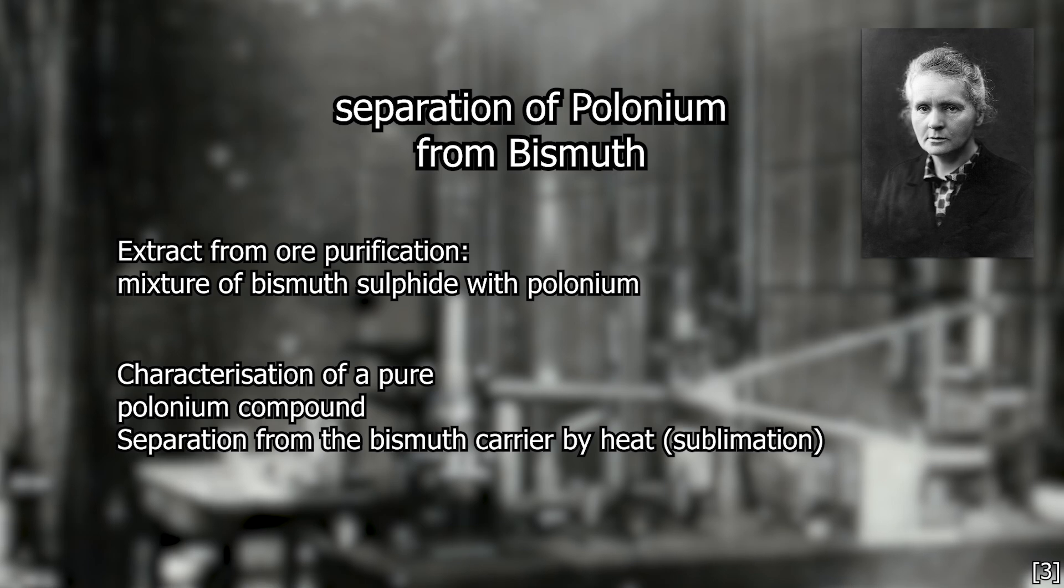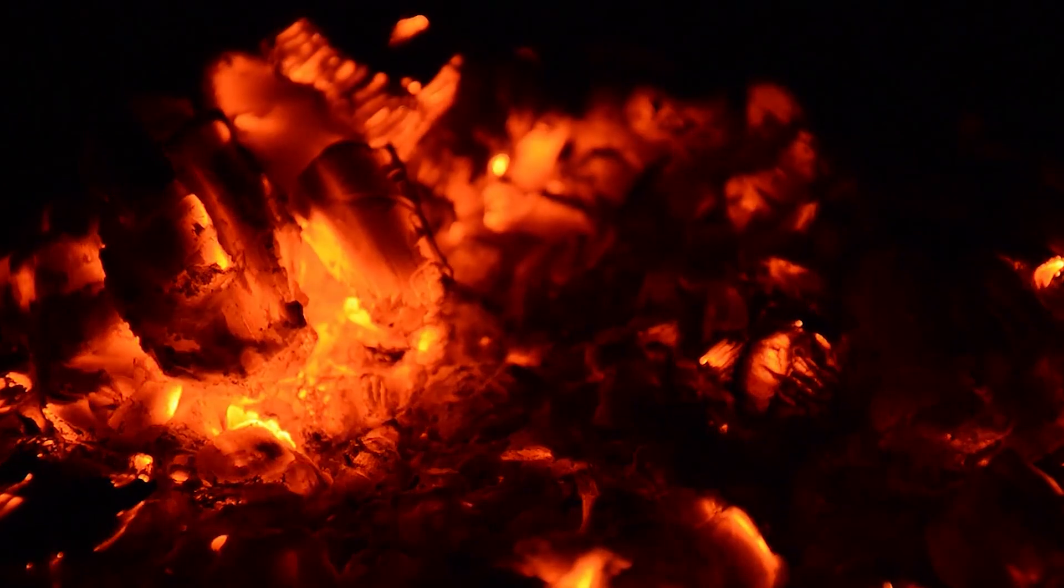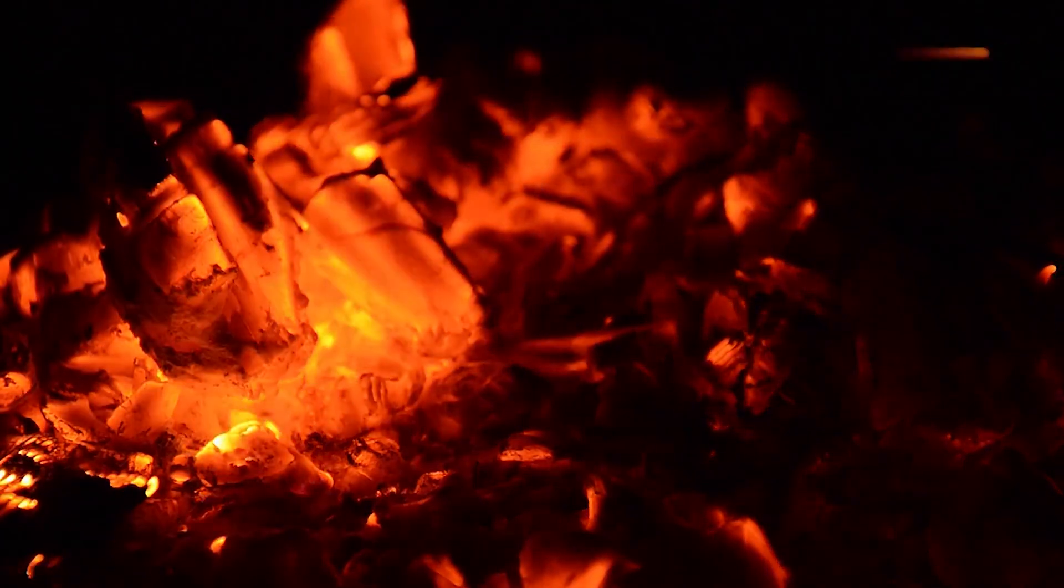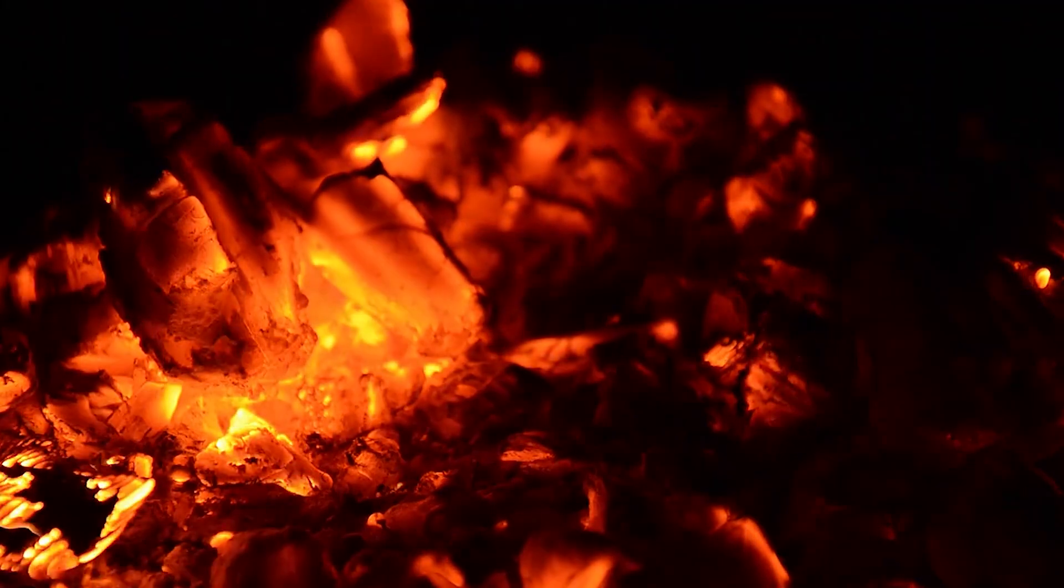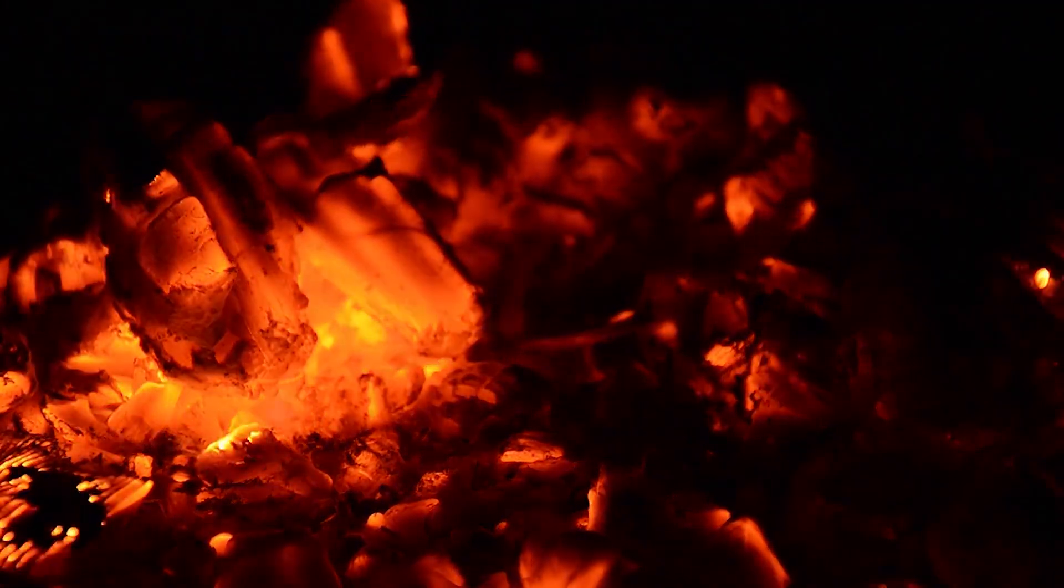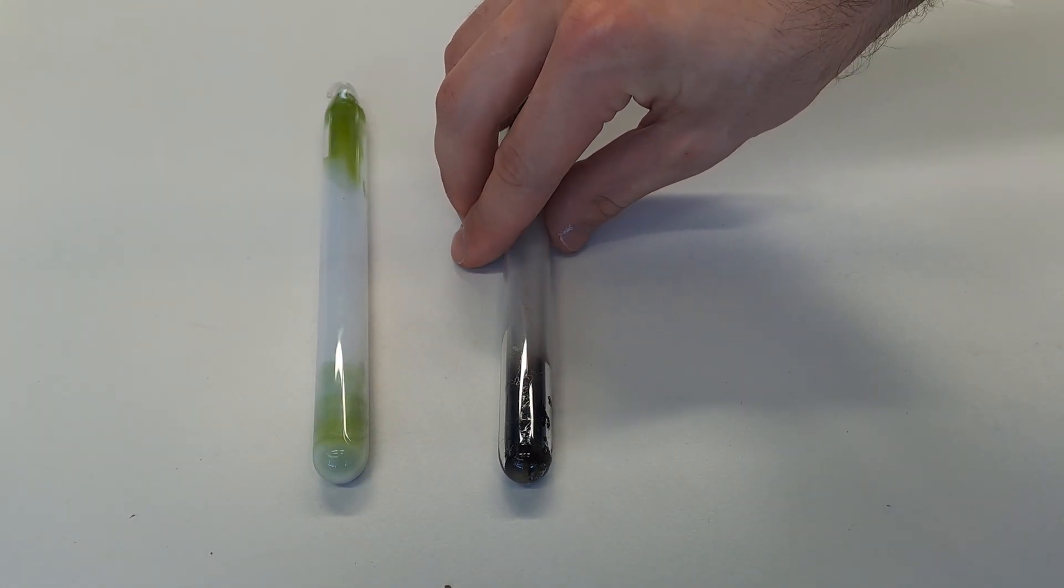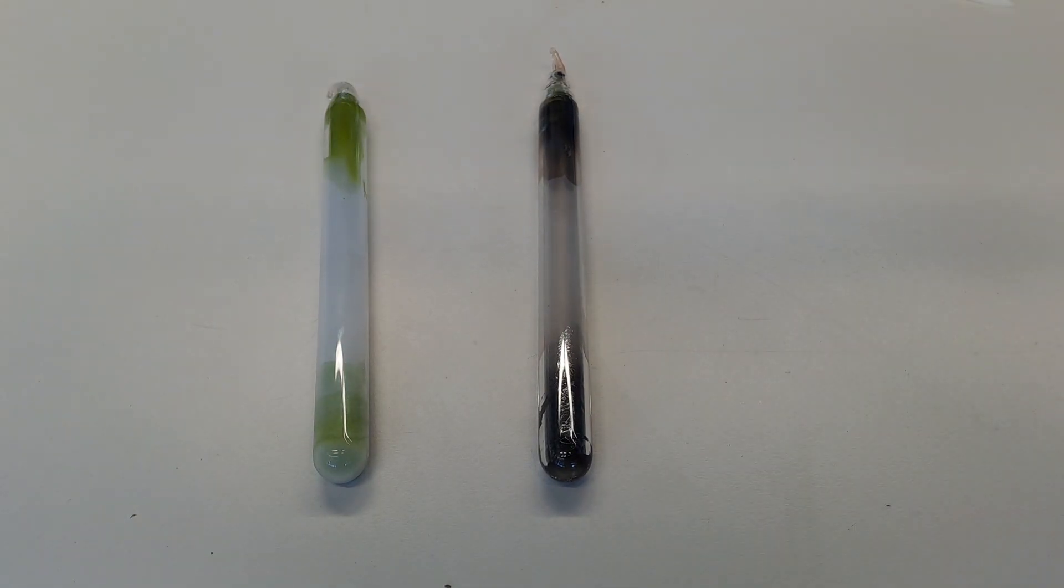They noticed that when pitchblende is heated, very active material can be resublimated. Accordingly, the sulfide was then heated to 700 degrees Celsius in a vacuum. In the colder areas, the polonium settled at around 250 to 300 degrees C, and on the hotter areas the bismuth settled. This is how pure polonium was first detected.